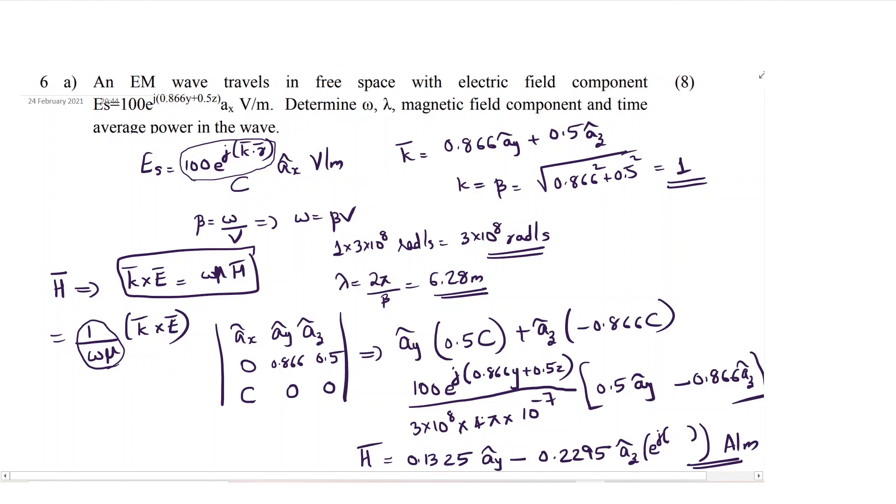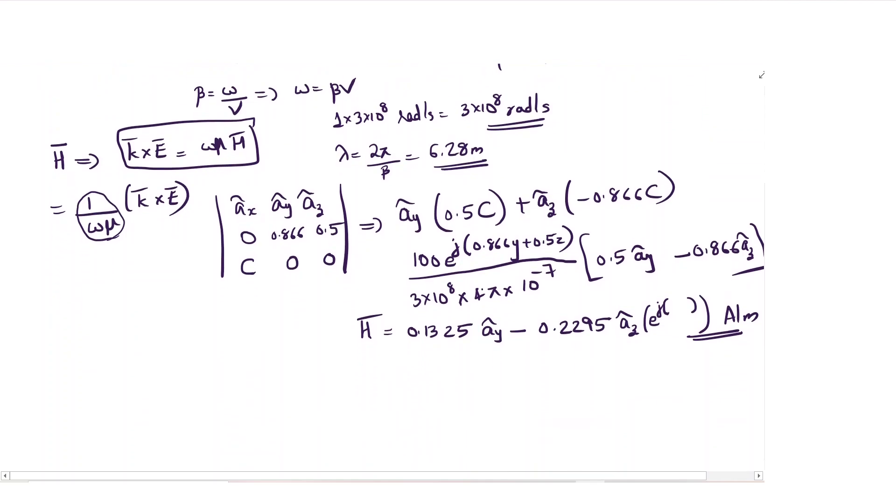The last part is to calculate the average power in the wave. Average power, the equation will be p average that will be equal to e0 square by 2 eta.